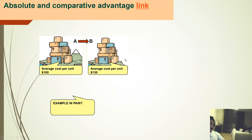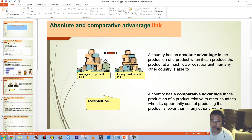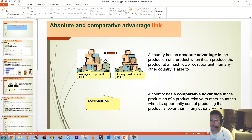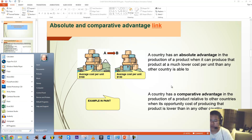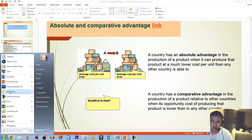They trade with each other to obtain what they want. There are two different types of advantages. The first is absolute advantage — this is when a country can produce a product at a much lower cost per unit than any other country. The second is comparative advantage — this is the production of a product relative to other countries when the opportunity cost of producing that product is lower than in any other country.